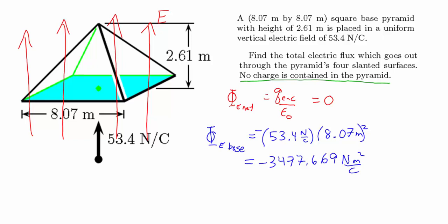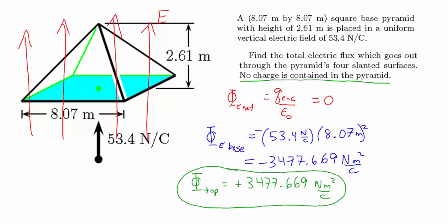So the flux out through the top has to be the positive of this, since the flux through the base plus the flux through the top must add up to zero. Therefore, the outward flux through the four slanted surfaces is positive 3477.669 newton meters squared per coulomb. This problem shows a basic application of Gauss's law: if the enclosed charge is zero, the total flux through the surface must be zero.